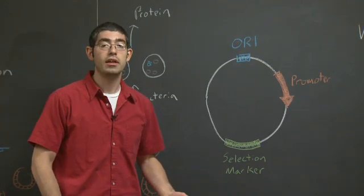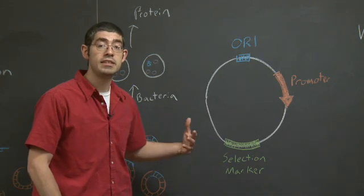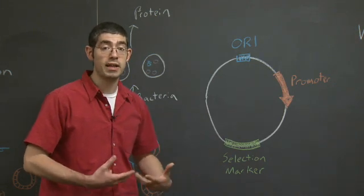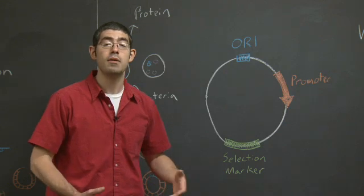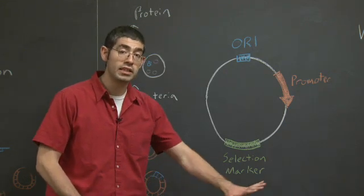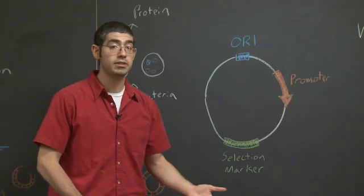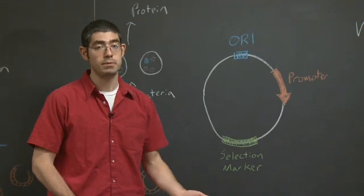A very common selection marker for bacteria is antibiotic resistance. For example, if the plasmid provides ampicillin resistance, then this means that any bacteria that takes up the plasmid will be resistant to ampicillin, and the bacteria that don't will still be vulnerable to it. So you can plate all of your bacteria on a plate containing ampicillin, and the ones that have the plasmid will survive. The ones that don't have the plasmid will perish.